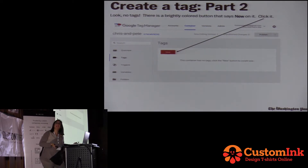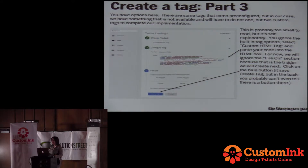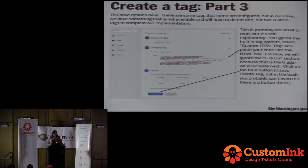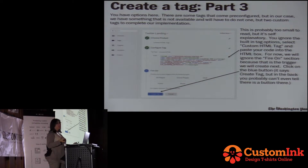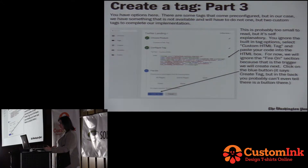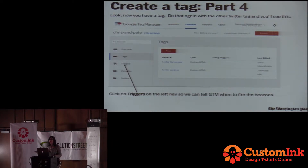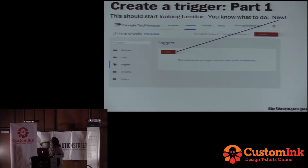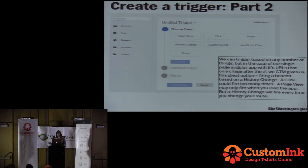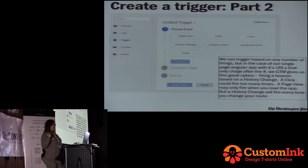Now we're going to create a tag. Pretty self-explanatory — click New. All we do is take this Twitter tag that had been placed in our Jira ticket by our marketing person and place it in the custom HTML section. Google Tag Manager does have a bunch of pre-configured tags, but most of the ones you find you need — other than DoubleClick and a few others — often aren't in there, so luckily you can just create your own very quickly. We save it. Now we need a trigger, because we created a tag but it's never going to load if we have nothing to tell it to actually fire.